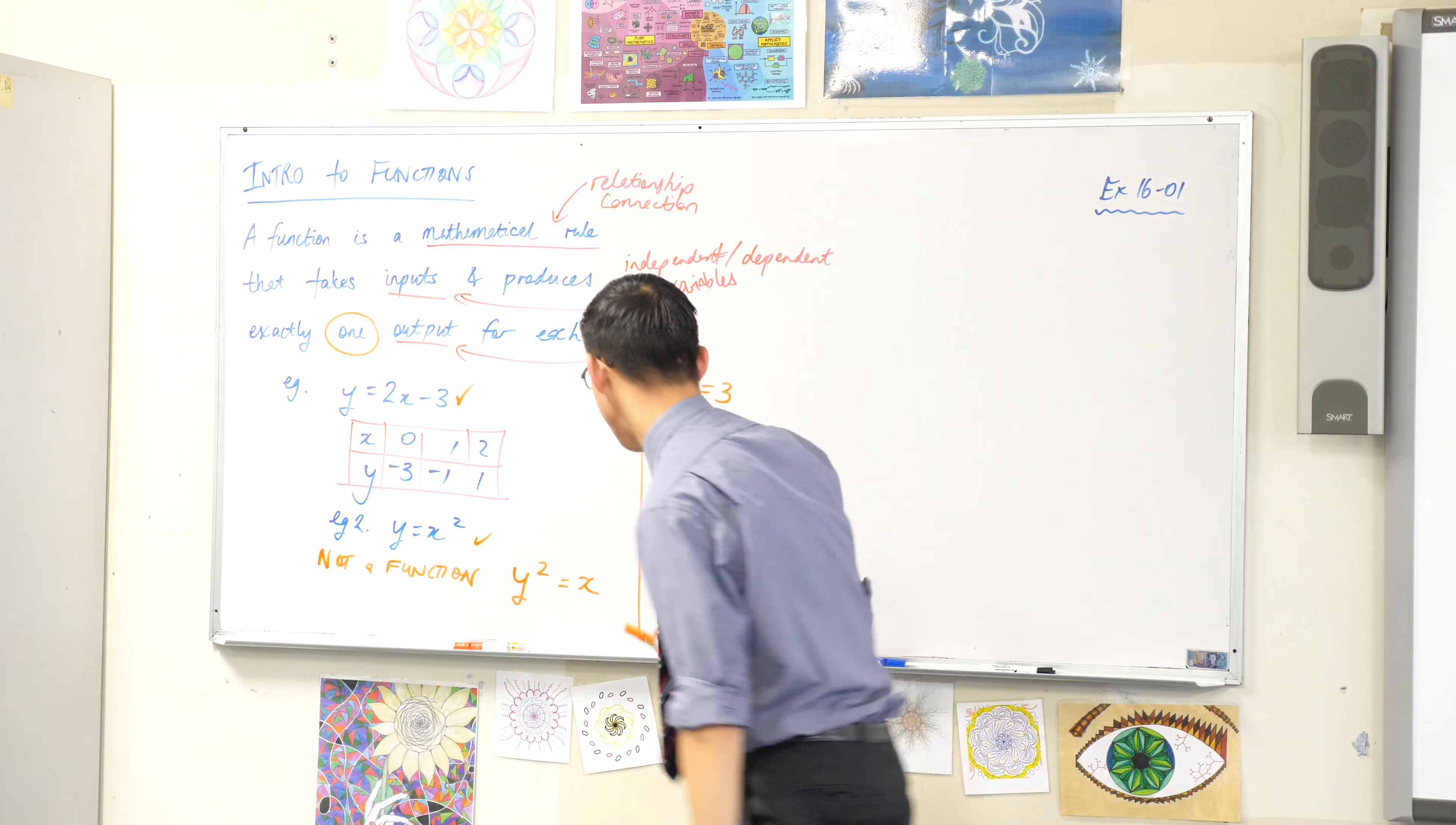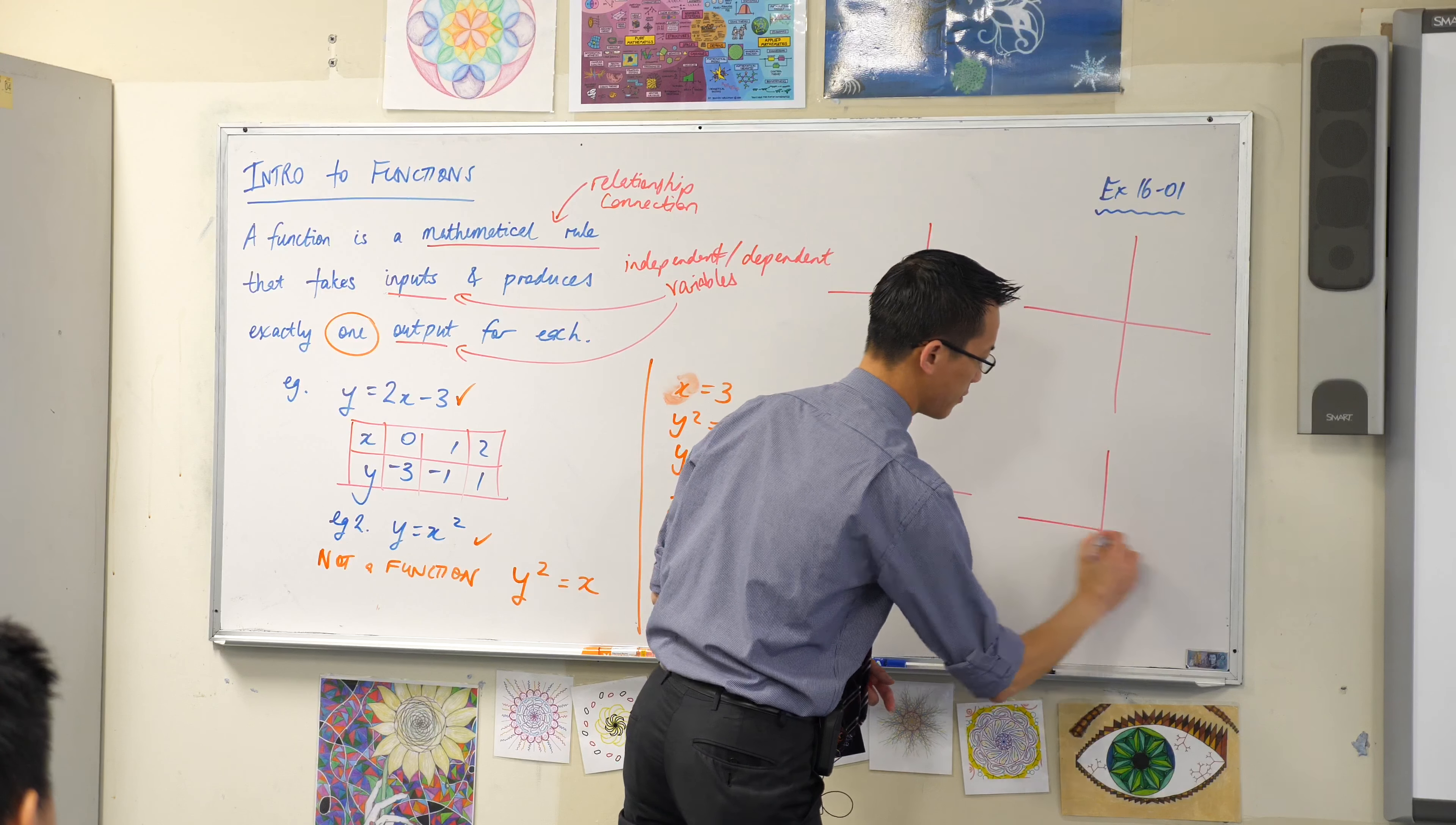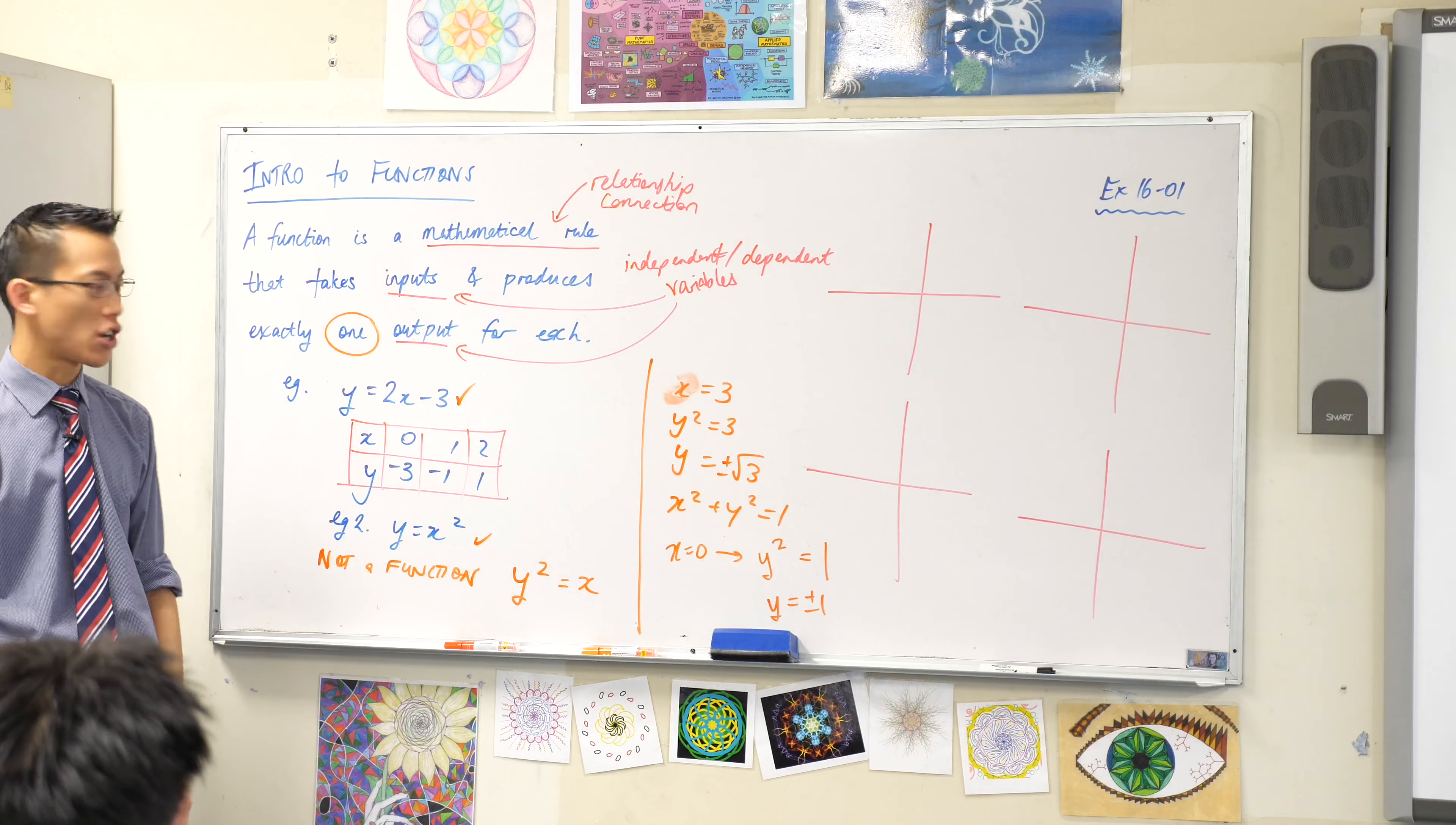So can you draw those four sets of axes for me, they don't even need to be too large. I usually like quite large diagrams but these can be quite small. Draw four sets of axes and let's real quick draw each of these roughly and see what's going on.